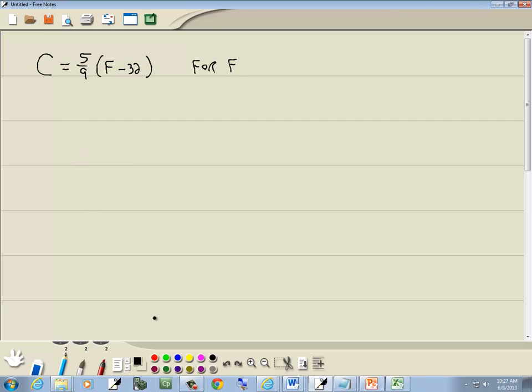Well, our first step, get rid of parentheses. And we do have some parentheses here. Actually, let me go ahead and write steps down here to do step one. So we're going to take the 5 ninths and multiply it times the F. And we'll multiply it times the negative 32.